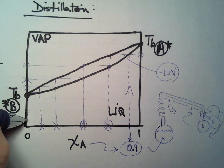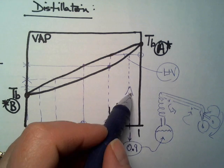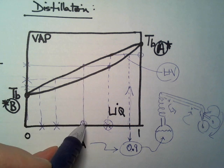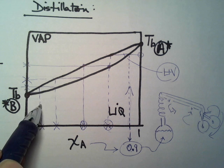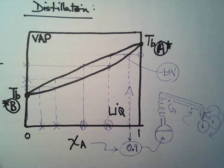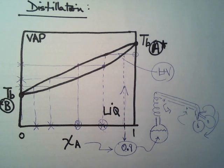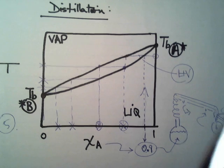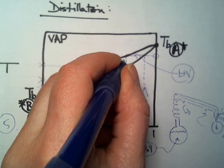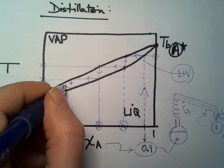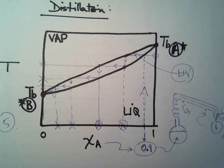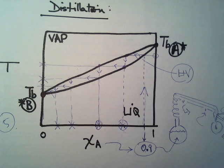So how many fractional distillation steps would we need in theory? One, two, three, four, five — five steps in theory. You're doing it five times and you have essentially isolated the lower boiling point liquid. You don't isolate the higher boiling point liquid; you isolate the lower boiling point liquid.